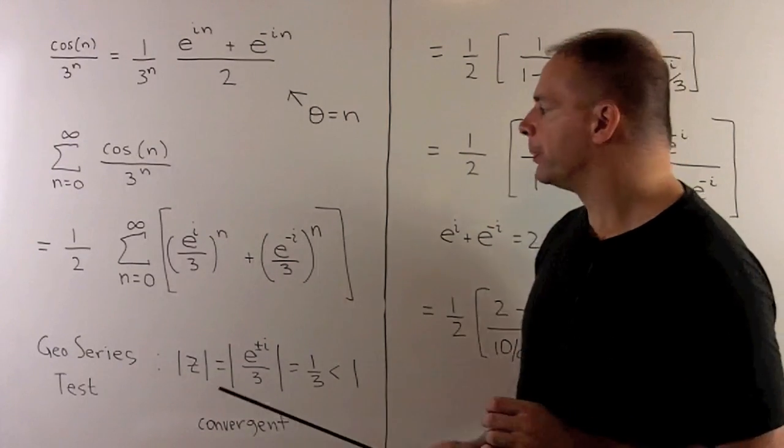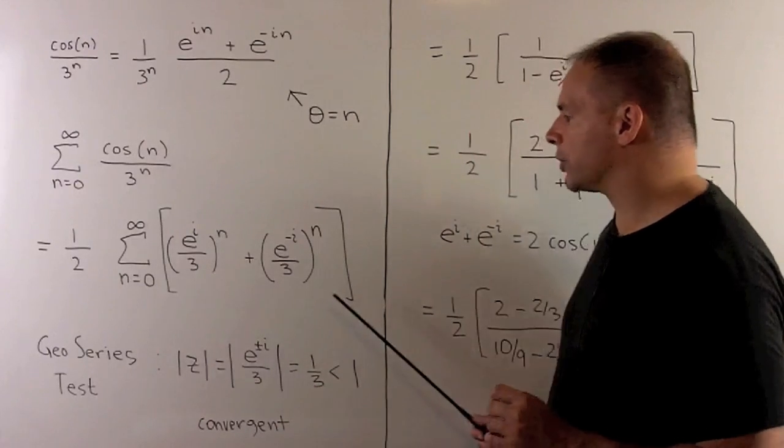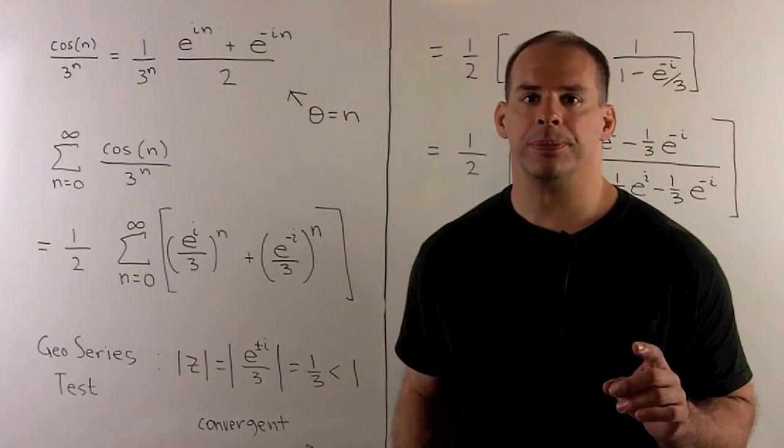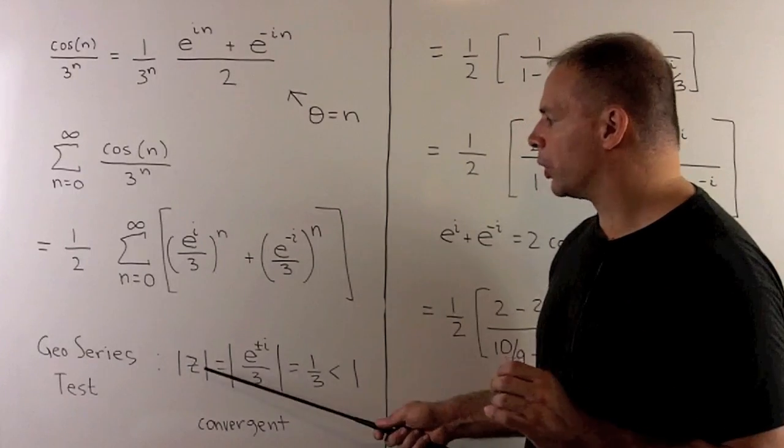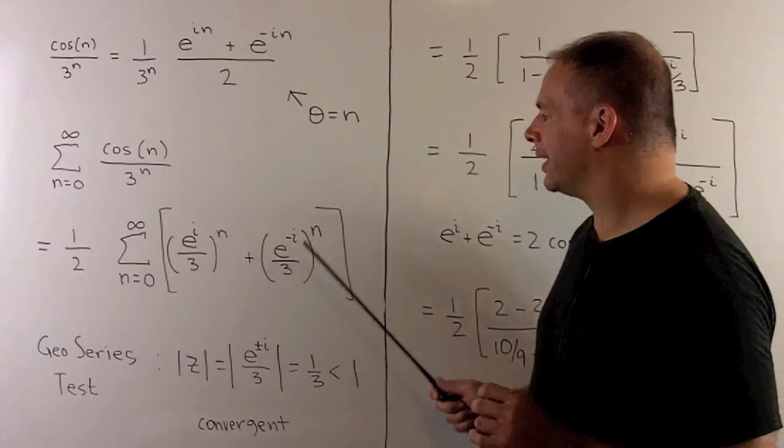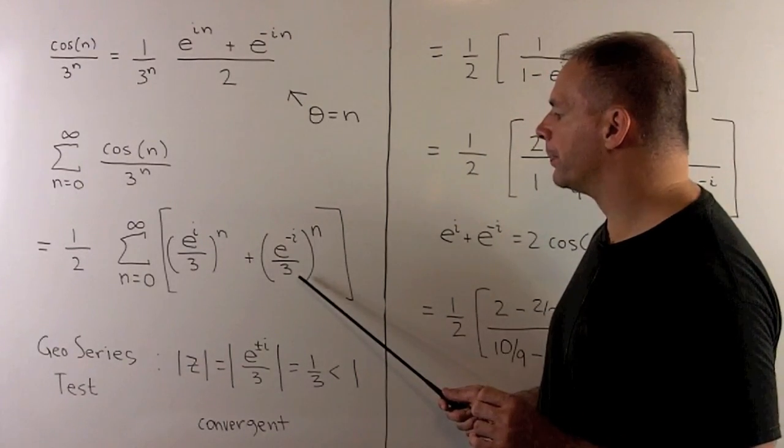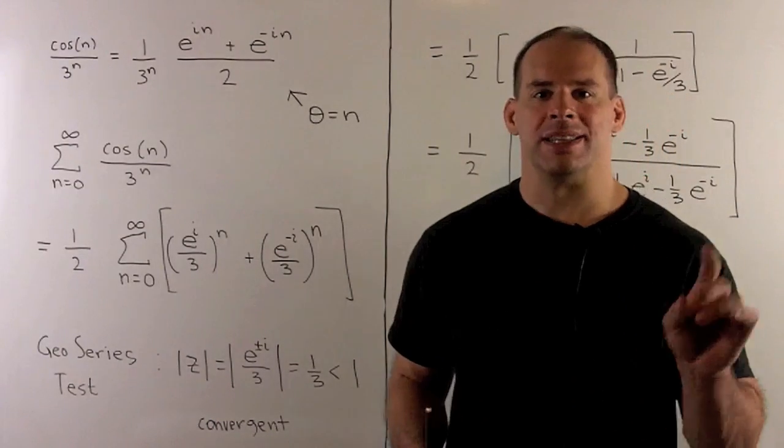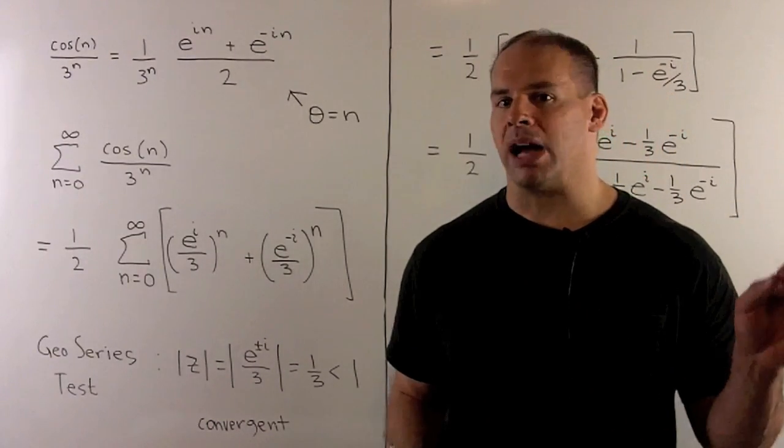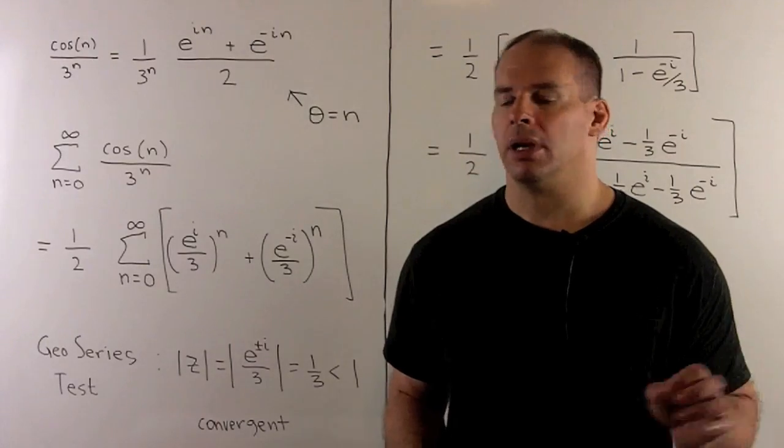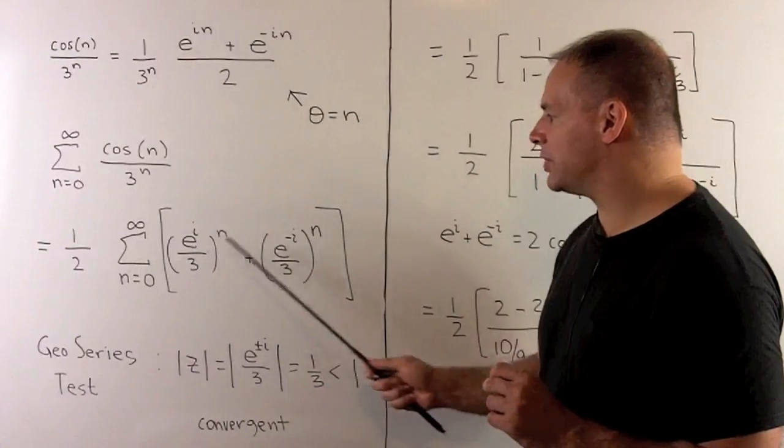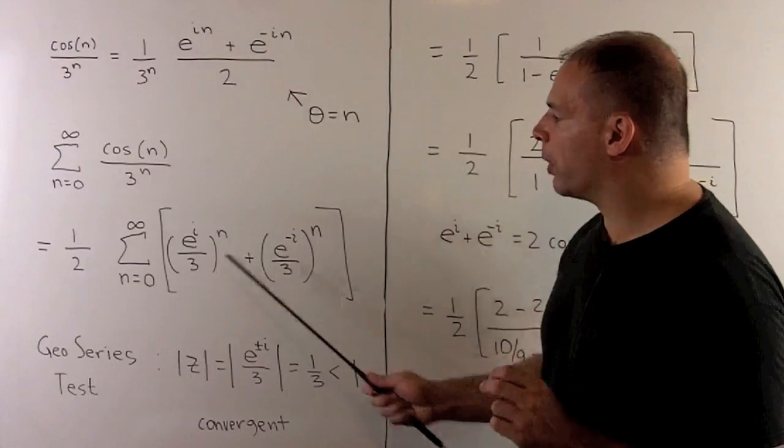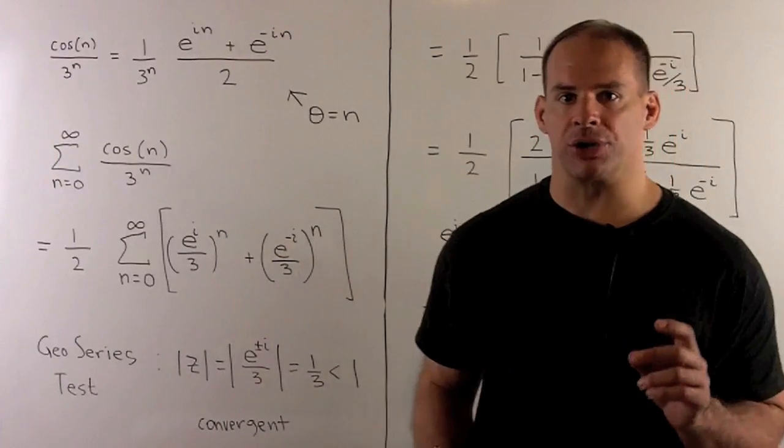So I substitute. We're going to have two geometric series. We apply the geometric series test. So for our z, we're going to use e to the i over 3, e to the minus i over 3. Take the modulus. If I take e to the i times any real number, the modulus is always 1. So we're going to get modulus of each of these numbers equal to 1 third, which is strictly less than 1. So these are both going to be convergent geometric series.